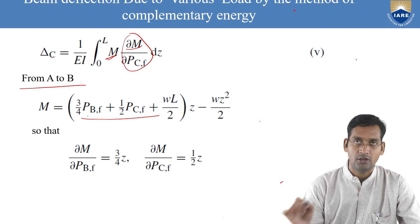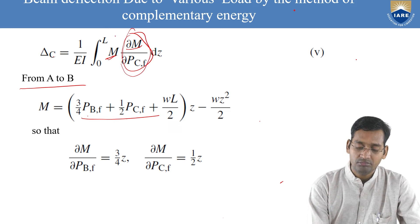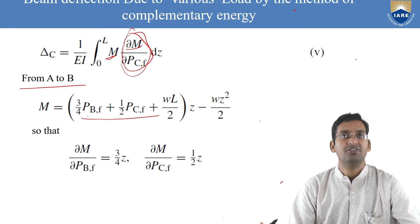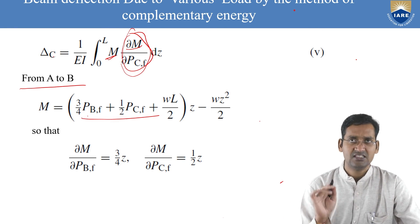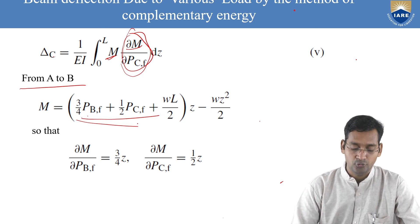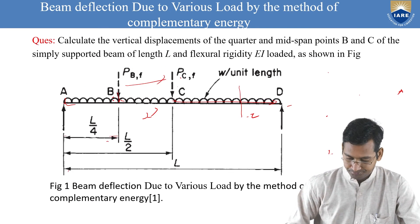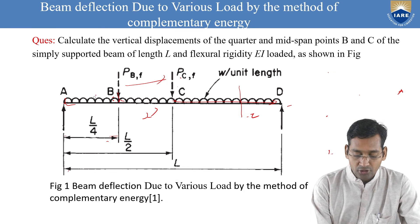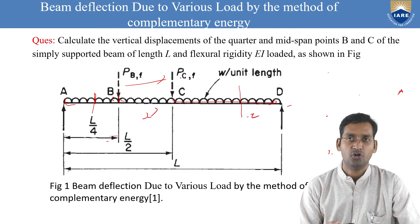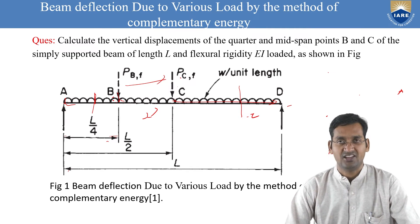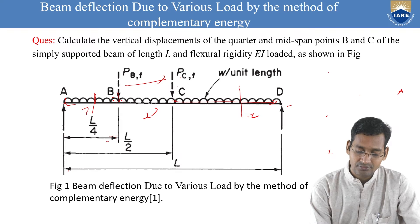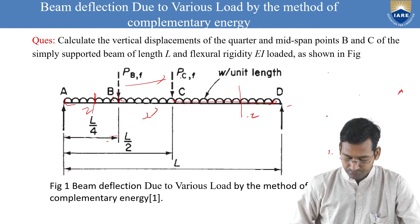According to the textbook notation used here, the position variable is taken as z. Differentiating M with respect to PBF: PBF term is 3/4 PBF × z, so ∂M/∂PBF = 3z/4. The PCF and WL terms have no PBF, so they contribute zero. Hence ∂M/∂PBF = 3z/4 for segment A to B.